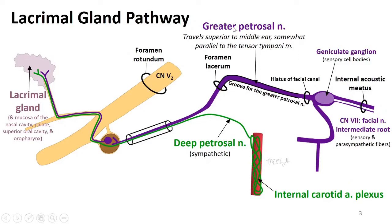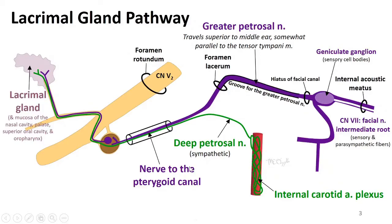So the greater petrosal nerve joins with the deep petrosal nerve — the greater being parasympathetic and the deep petrosal being sympathetic. They then course together into a canal, and having joined together they form the name of that canal: the nerve of the pterygoid canal.